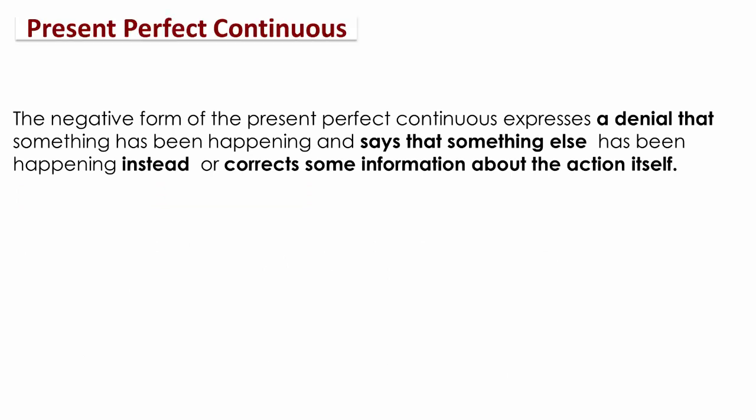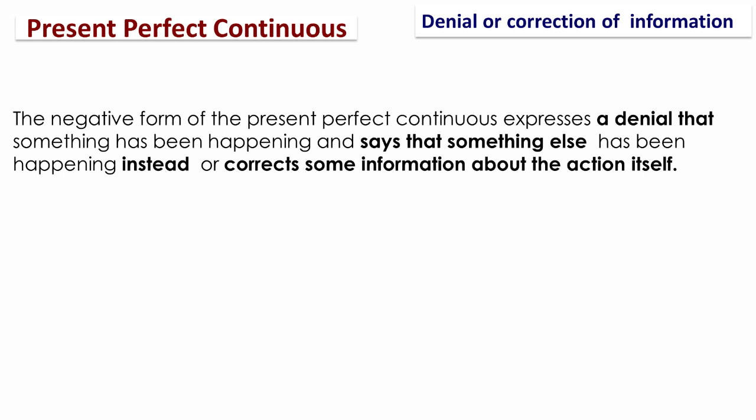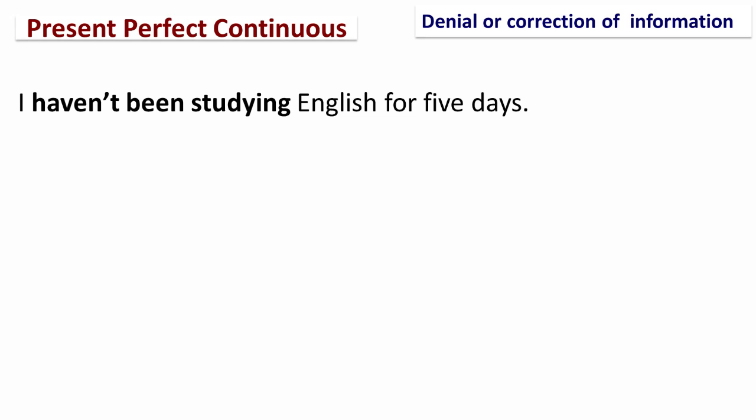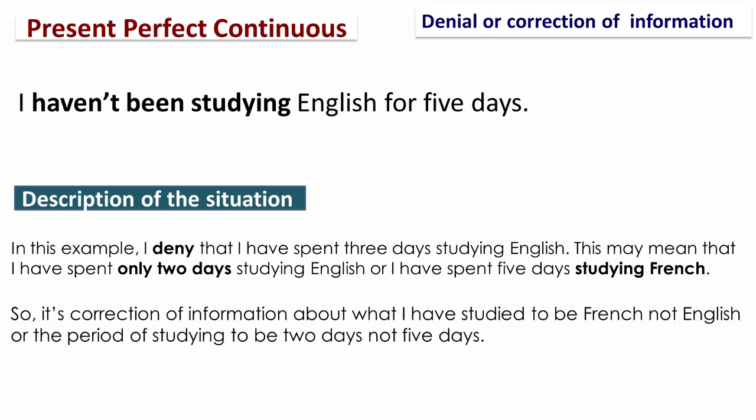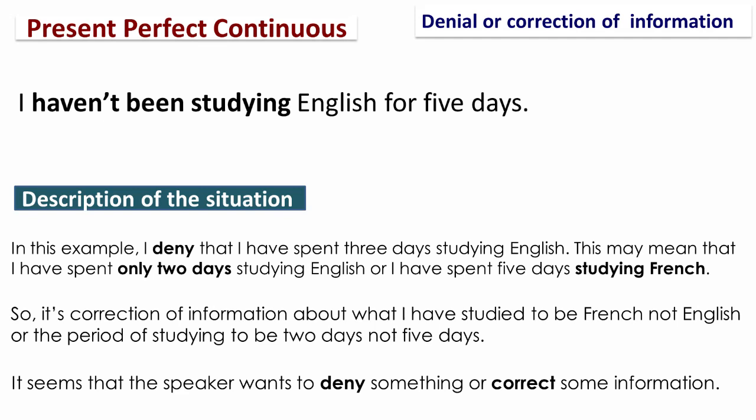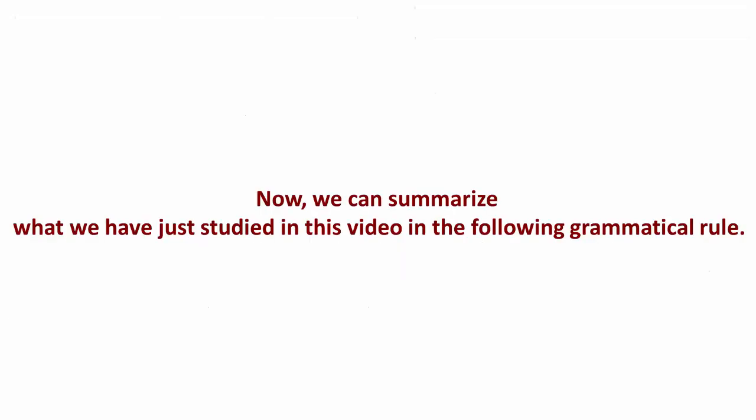On the other hand, the negative form of the present perfect continuous expresses a denial that something has been happening, and says that something else has been happening instead, or corrects some information about the action itself. For example: 'I haven't been studying English for five days.' In this example, I deny that I have spent five days studying English. This may mean I have spent only two days studying English, or I have spent five days studying French — so it's a correction of information about what I studied or the period of studying.